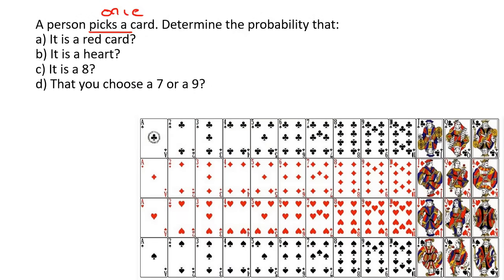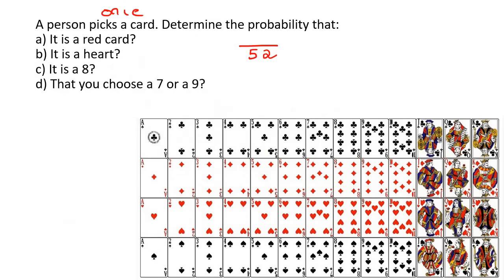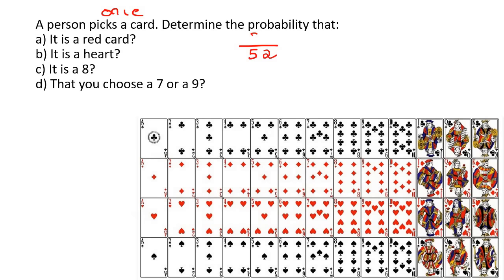A person picks a card — determine the probability that it is a red card. We know there are 52 cards altogether, so that's the number at the bottom. For it to be a red card, it could be any heart or diamond: that's 13 plus 13, which is 26. So it's 26 out of 52, which simplifies to 1 over 2. Your teacher might use percentage instead — we're allowed to use percentages, decimals, or fractions, but fractions are the most popular.